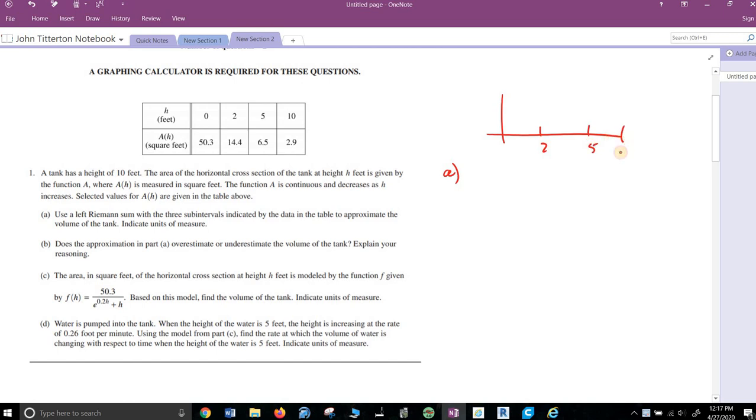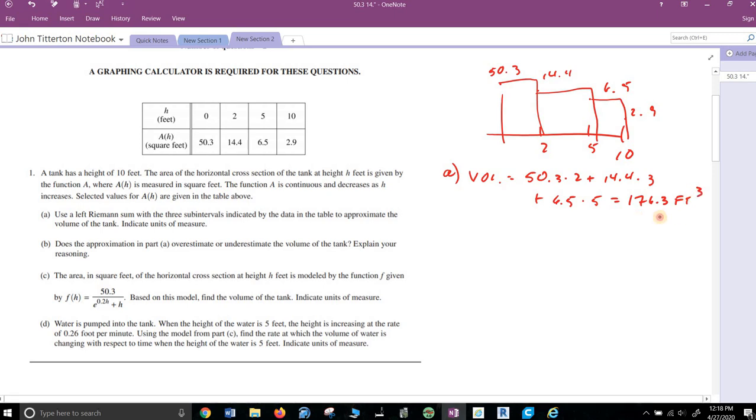2, 5, 10, and then 2.9, 6.5, 14.4, 50.3. They say do a left Riemann sum, so volume equals 50.3 times 2 plus 14.4 times 3 plus 6.5 times 5, should get 176.3 cubic feet.